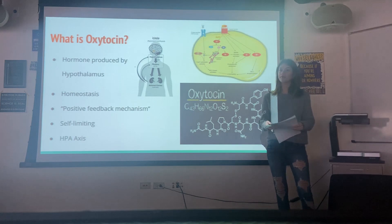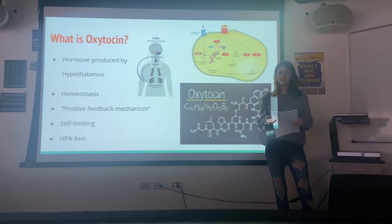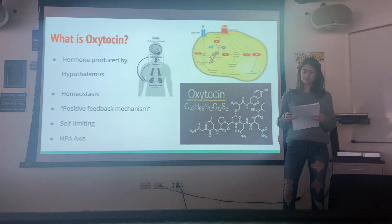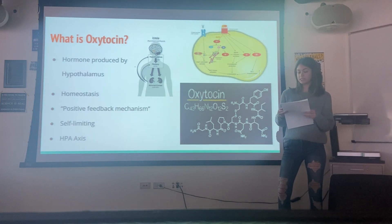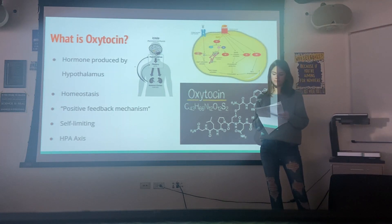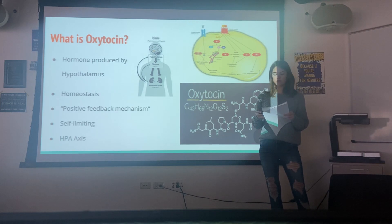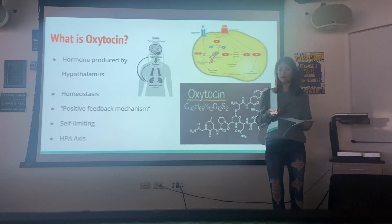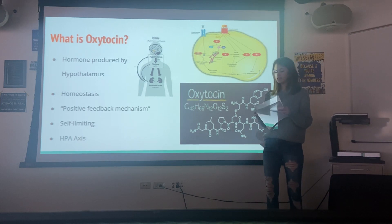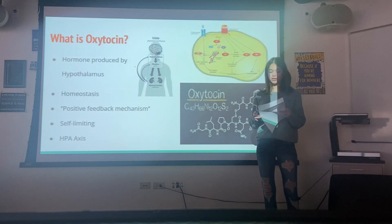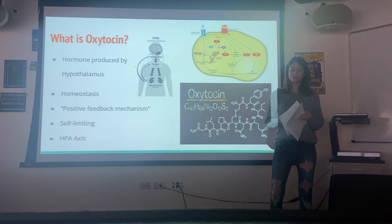Oxytocin is in the hypothalamic region of the brain, and it's responsible for maintaining homeostasis. When a system of the body is imbalanced, the signal is sent to the hypothalamus and the pituitary gland, which release the proper hormones into the body in order to return to equilibrium. Oxytocin is released using a positive feedback mechanism, which means that the hormone is produced when a trigger event occurs. This mechanism is especially prevalent during childbirth and breastfeeding. The oxytocin production process is self-limiting, meaning that when the trigger behavior ends, the hormone production also ceases.